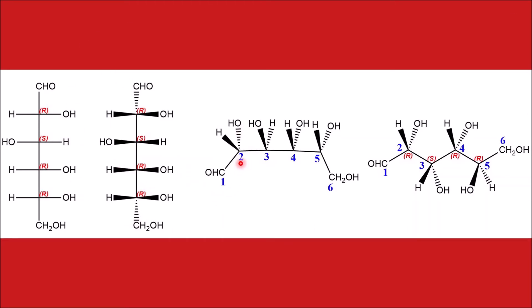Let us write down this structure. First is the aldehyde carbon, next the second, third, fourth, and fifth carbons — these four are chiral. All the groups on the right, that is OH, H, OH, and H, would be moving away from us on the dash bond. Accordingly, the groups on the left will be on the wedge bond: H, OH, H, and OH; H, OH, H, and H.